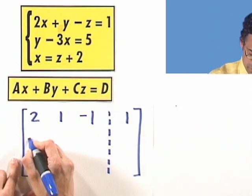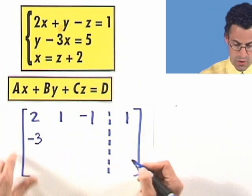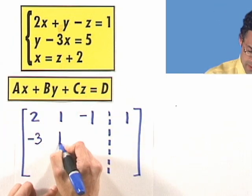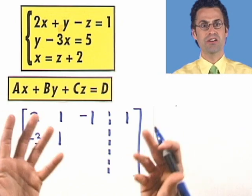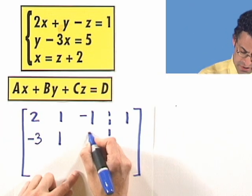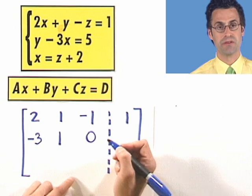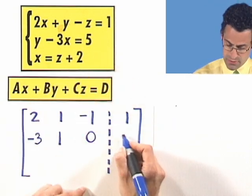So in fact, this is a negative 3 for x. What's the y coefficient? An invisible 1. What's the z coefficient? Well, there's no z. So what do you do? That means that there must have been a 0. So there's actually an invisible 0 in front of the z coefficient there. And I see that that equals 5.